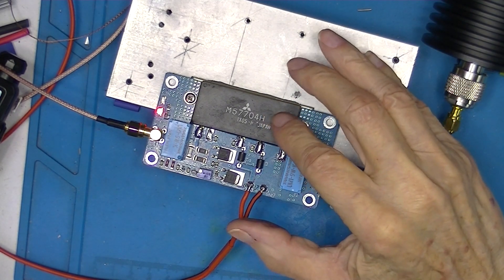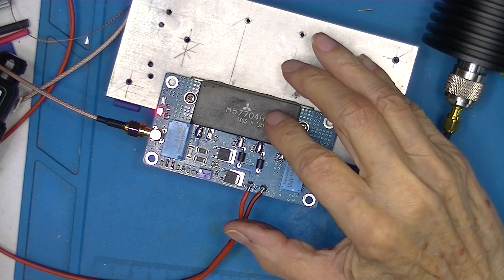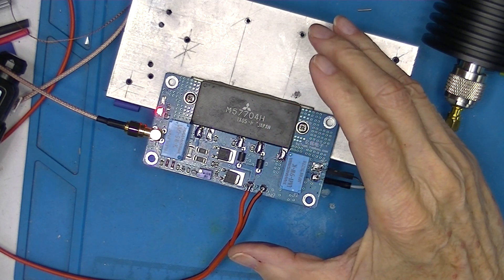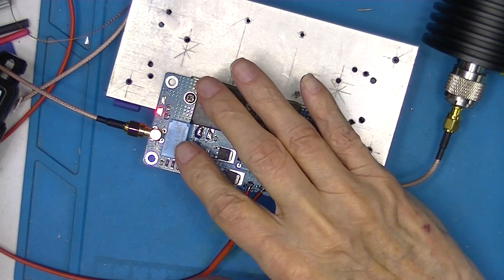I moved this low-power amplifier, the 7704, from the board that had no relays to the board that has relays.